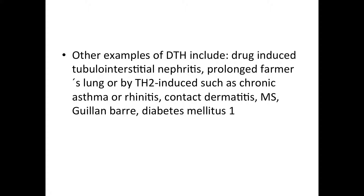Another example is multiple sclerosis, in which your basic myelin protein works as the antigen. Another example is Guillain-Barré neuropathy, in which you have a peripheral neuropathy defect and the antigen will be your Schwann cell products. The last example is diabetes mellitus type 1, where the attacked area is usually the beta cells of the pancreas, which are the insulin-producing cells.